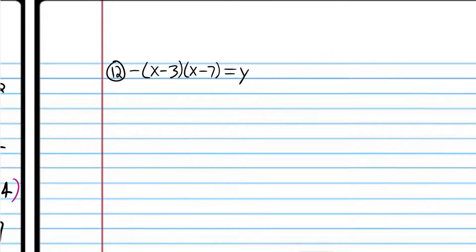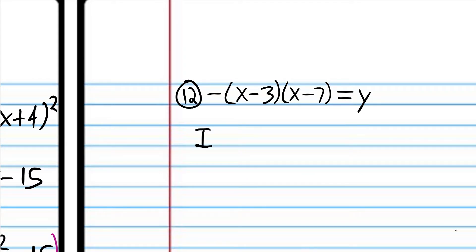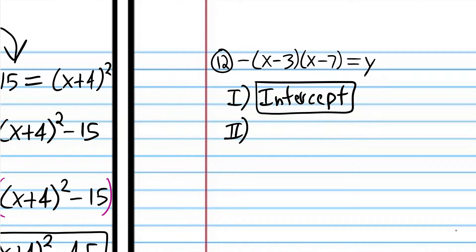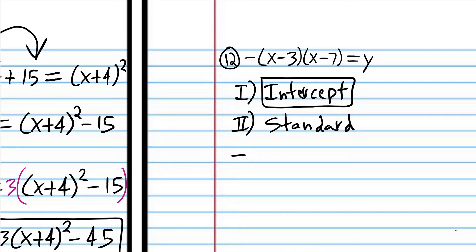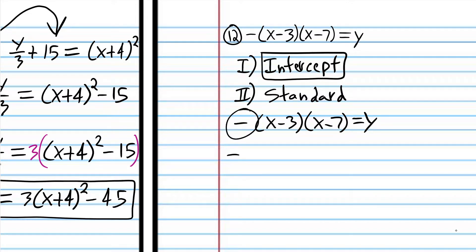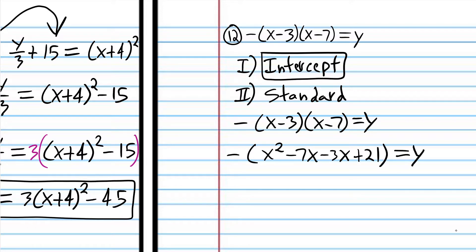We're back. First we're going to identify the form — obviously intercept form. Now we're going to convert to standard form using FOIL. Note that this is just a negative 1 — when you have a negative sign with no number next to it, it's considered negative 1. x times x is x squared, x times negative 7 is negative 7x, negative 3 times x is negative 3x, and negative 3 times negative 7 is positive 21. Combining: negative 7x minus 3x is negative 10x.